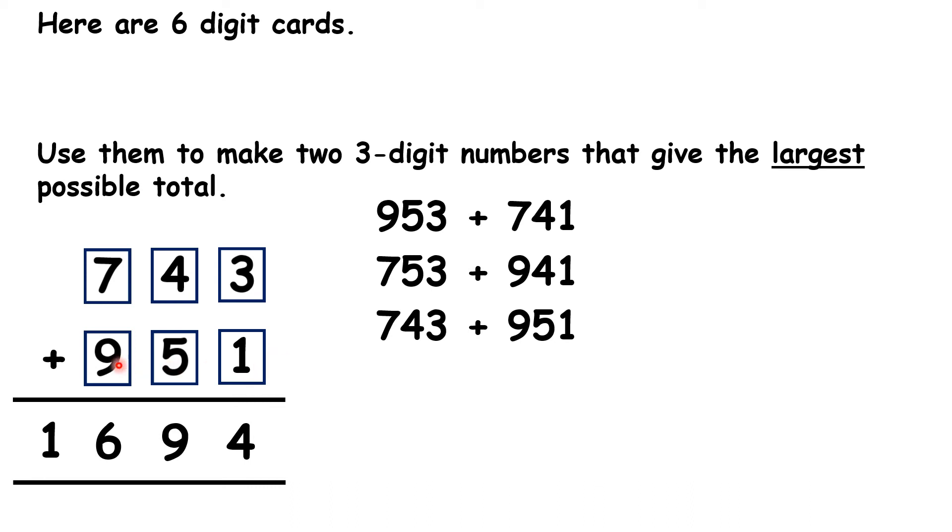But then if we switch the hundreds back again, we've got two new numbers, which also add to 1,694. So that's 943 and 751.